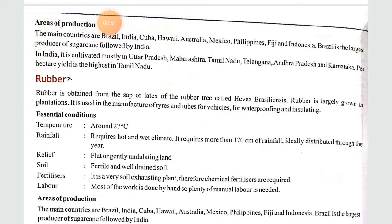In India, sugar cane is cultivated mostly in Uttar Pradesh, Maharashtra, Tamil Nadu, Telangana, Andhra Pradesh, and Karnataka. Per hectare yield is the highest in Tamil Nadu.